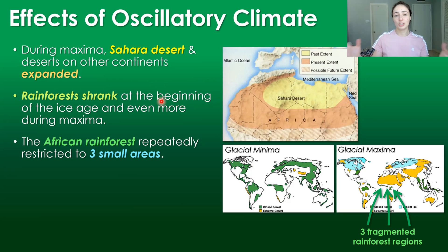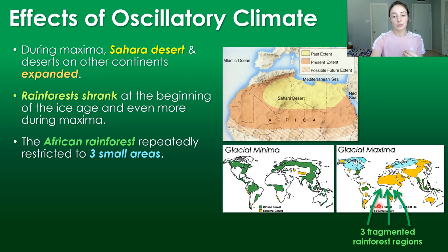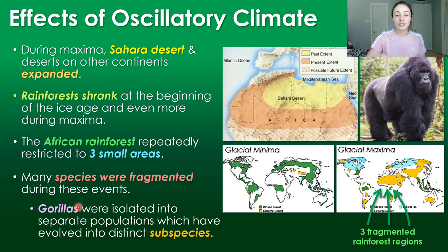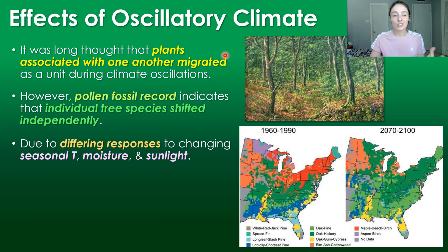Then again at that point around 3 million years ago, forests shrank more, and obviously during maxima they shrink more than during minima. In fact, many rainforests have undergone expansion and contraction similar to the glacial cycles, like the African rainforest, which has repeatedly expanded a little but then been restricted to three small areas as we can see in the map, versus the glacial minima map showing the larger area. Because of this, many species that lived in that forest were frequently fragmented into sub-populations, and gorillas are one such example,